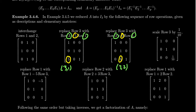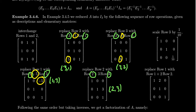Next, we replaced row 1 with row 1 minus 5 times row 3, so in the 1, 3 position we put negative 5. Then we replaced row 2 with row 2 plus 3 times row 3, so in the 2, 3 position we put a 3 — you just place the coefficient there. Finally, we replaced row 1 with row 1 plus 2 times row 2, so in the 1, 2 position we put the number 2.